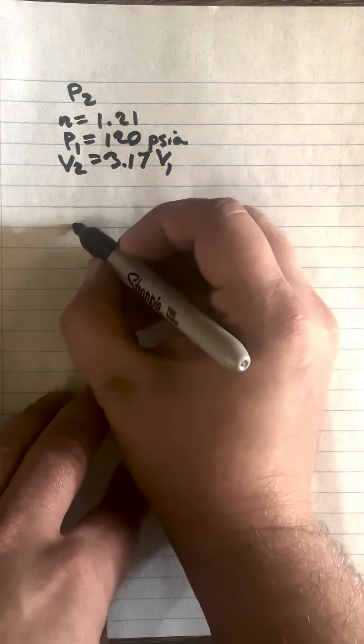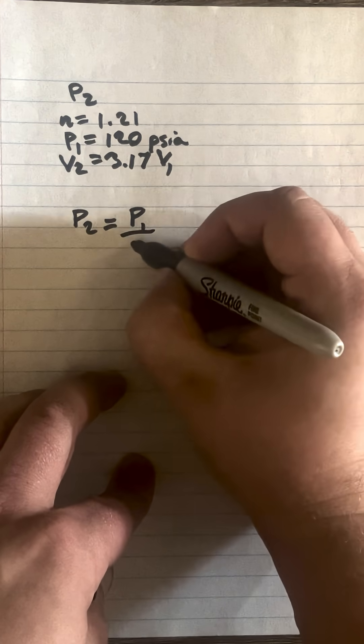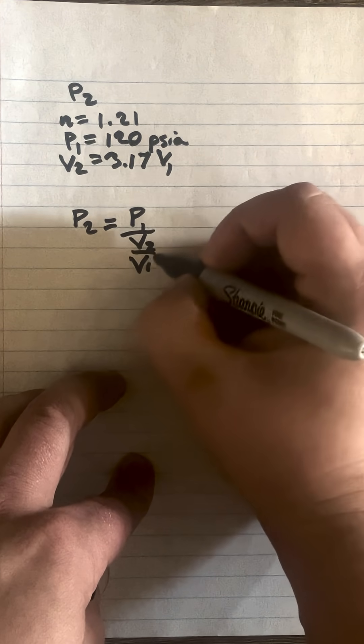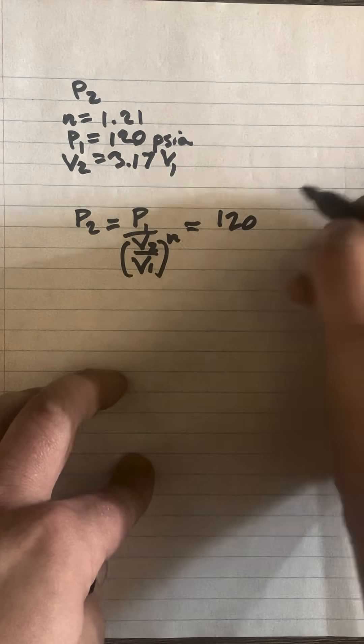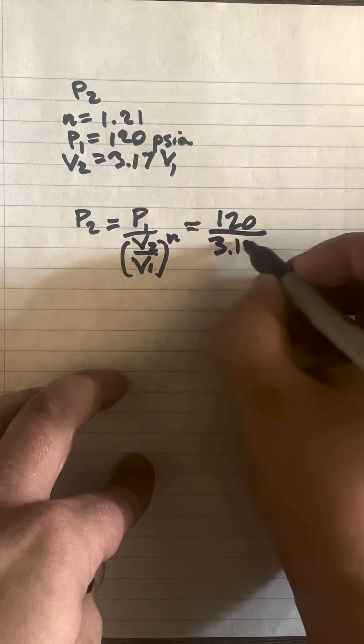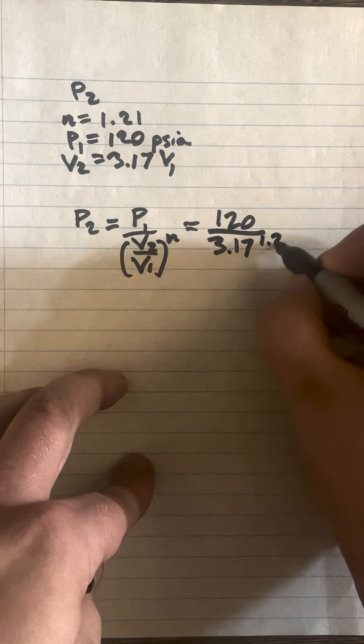So the way we're going to write that out is we're going to solve for P2, P1 up here over V2 over V1 to the N. And if we use all this information, that's going to come out to 120 P over V2 3.17 and N is 1.21.